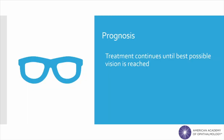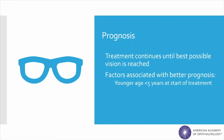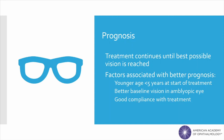For every child with amblyopia, treatment continues until the best possible vision is reached. For some children, this may mean 20-20 vision, but for others it may not. Some factors associated with better prognosis include the younger the child is, the better the outcome; better baseline visual acuity in the amblyopic eye is associated with better prognosis; and finally, good compliance with treatment is related to better outcomes.